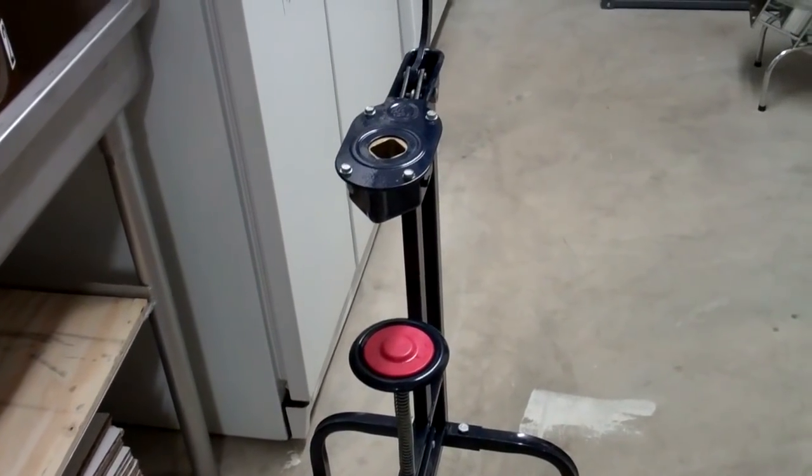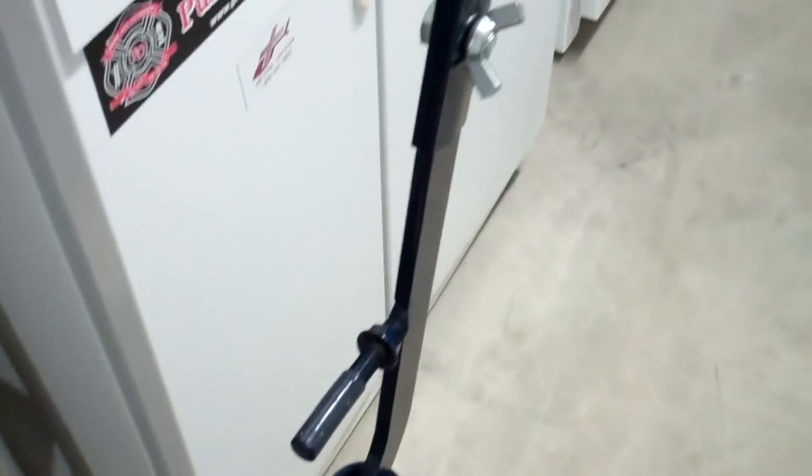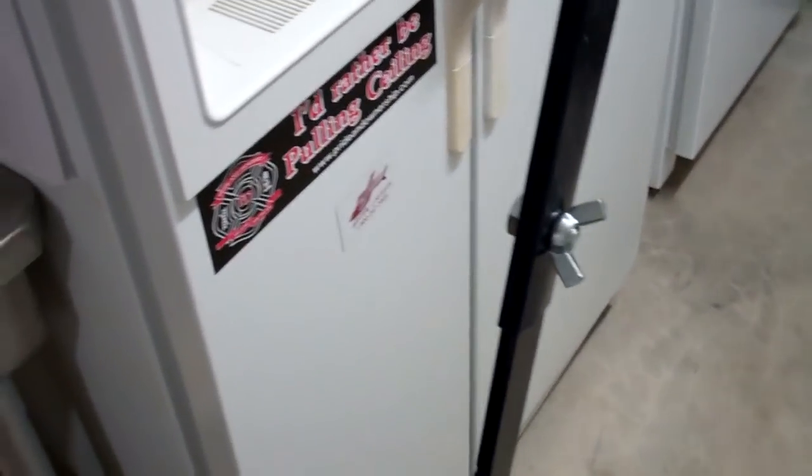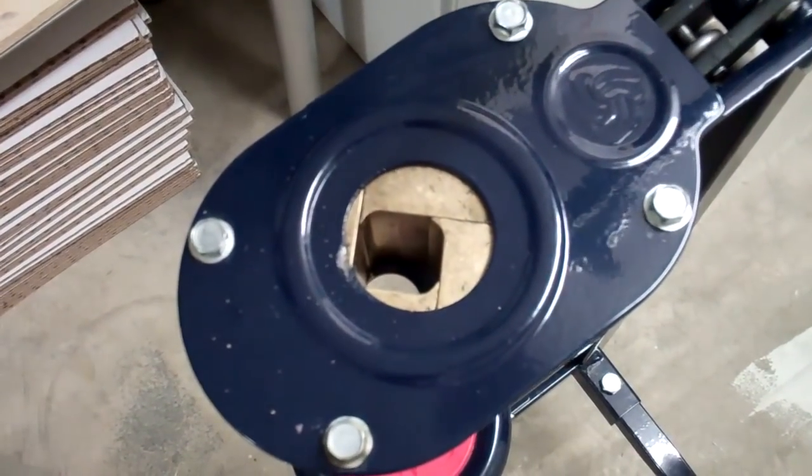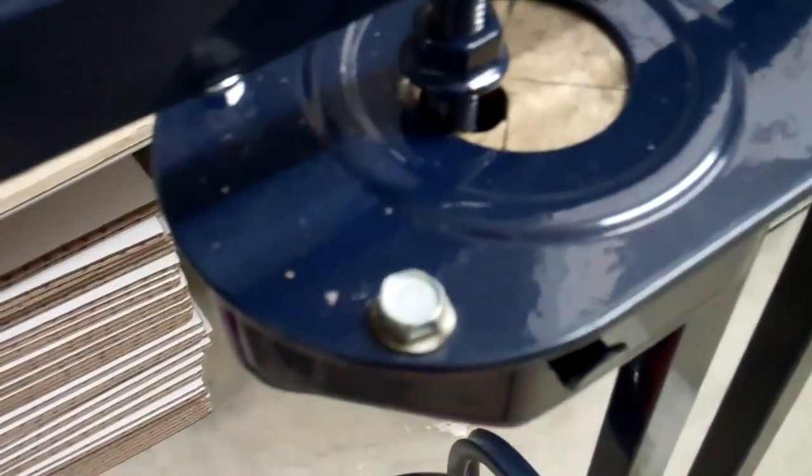So the way it works is this brass part here. That's where your cork goes. You've got a plunger right here with an arm. As you pull the arm down, it compresses the cork. And then the plunger comes down and pushes it down into the bottle.